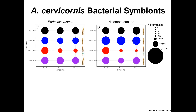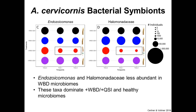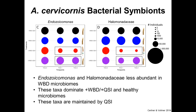Now I want to focus on the symbionts — endozoicomonas. Using the same setup, we see that endozoicomonas and the related family Halomonadaceae are less abundant in white band disease microbiomes, but these taxa dominate the QSI-rescued corals as well as the healthy corals. The only difference between corals that got disease and the QSI-rescued corals was the QSI. So while QSI is inhibiting disease species, it's actually helping to maintain putative coral symbionts like endozoicomonas and halomonadaceae. Endozoicomonas is emerging in the literature as a potential coral symbiont worldwide — many people are finding that healthy corals are dominated by these organisms.